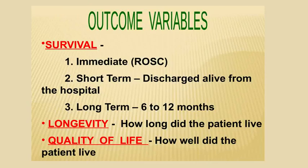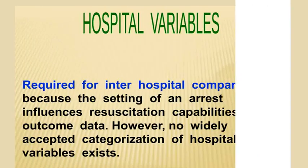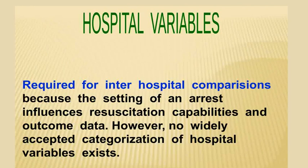Outcome variables include whether the patient survived or did not survive. In case of survival: immediate return of spontaneous circulation, short-term and long-term longevity, and quality of life — everything has to be mentioned, immediately after the event or later on. Hospital variables, as I mentioned, are for academic interest only and are required for inter-hospital comparisons. Thank you.